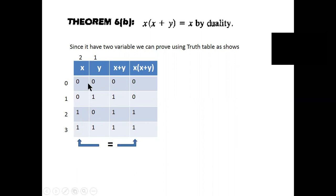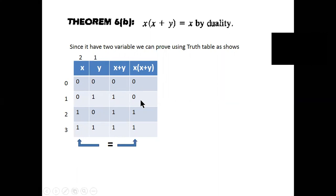What is x plus y? 0 plus 0 equals 0. 0 plus 1 equals 1. 1 plus 1 equals 1. 1 plus 1 equals 1. Then x into (x plus 1): multiplying — 0 into 1 equals 0, 0 into 0 equals 0, 1 into 0 equals 0.